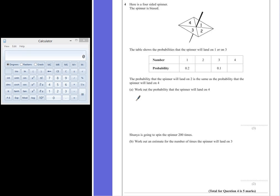Part A. Work out the probability that the spinner will land on 4. Well, we have to remember that all probabilities add up to give us the number 1. So if we take away the two probabilities that we know, in this case 0.2 and 0.1, we'll be left with the remaining probabilities.